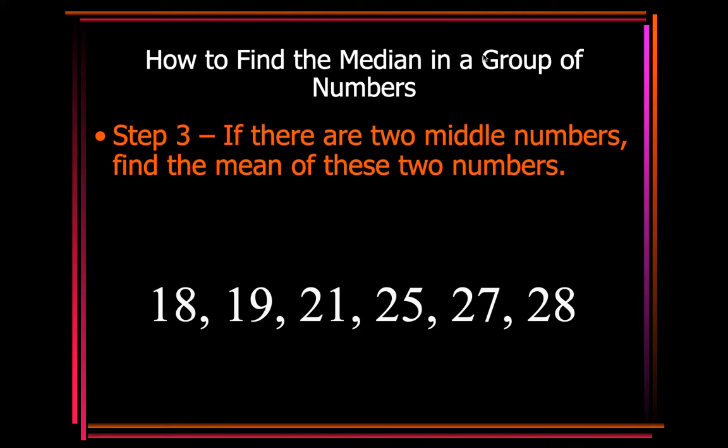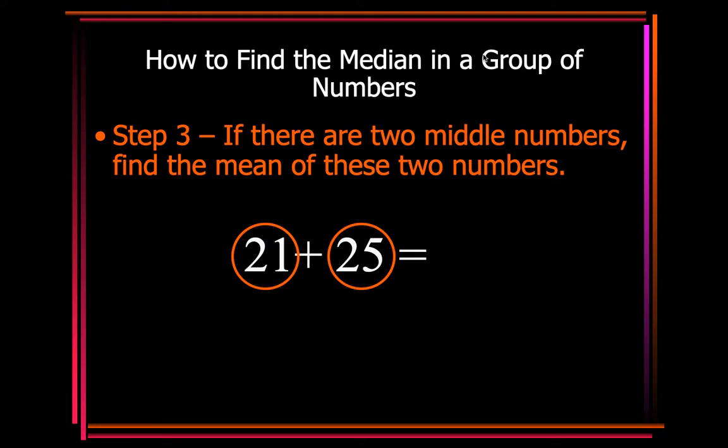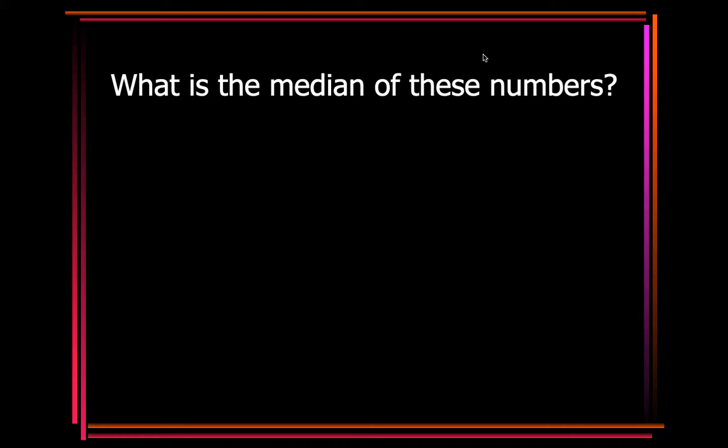Now you're going to end up with two numbers here. You have 21 and 25. Again, remember from the notes, if you have two numbers, you have to add them up, and then you divide them by 2. So 23 is going to be your median.